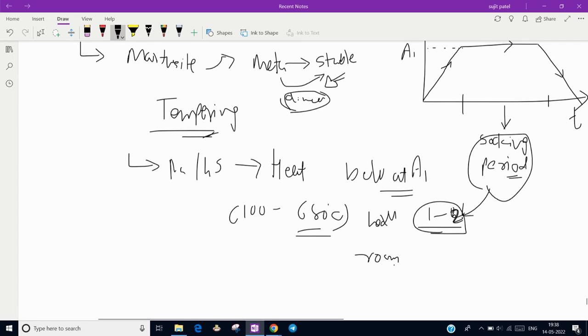We cool at a slow rate. If we do very rapid cooling, then again martensite will form. We have to remove the martensite stage but retain some hardness as well as increase toughness. Due to this slow cooling at room temperature, toughness increases.